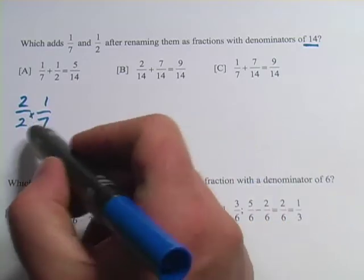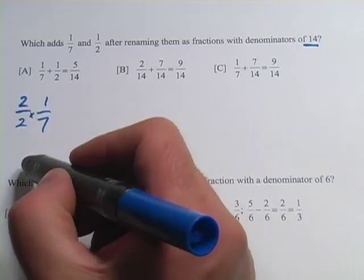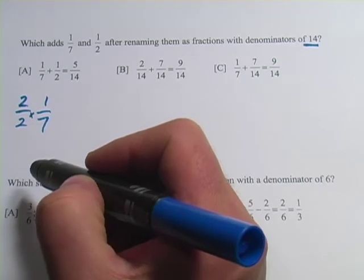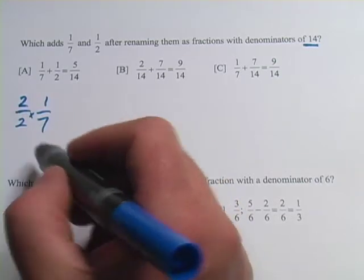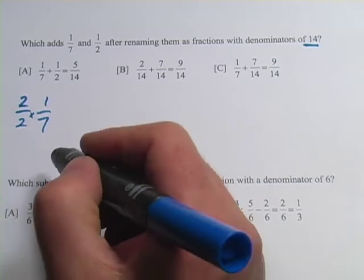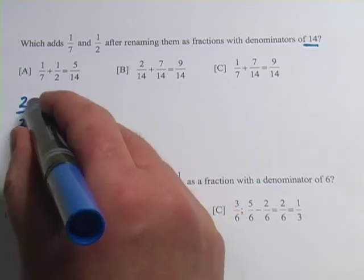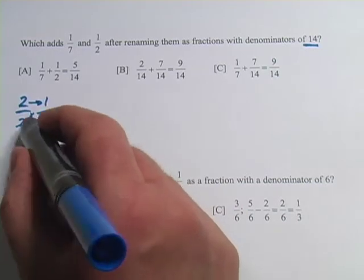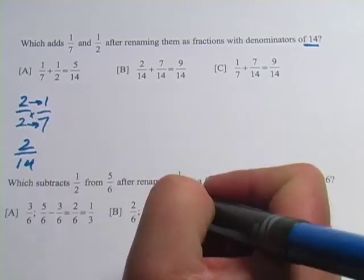So when we multiply 1/7 by 2 over 2, we're really multiplying it by 1, which doesn't change that number. So what this becomes is really another form of 1/7, just renaming the fraction. Well, let's finish this multiplication. 2 times 1 is 2. 2 times 7 is 14. So we get 2/14.